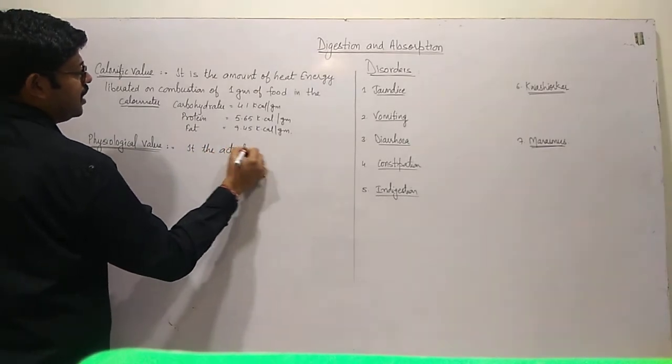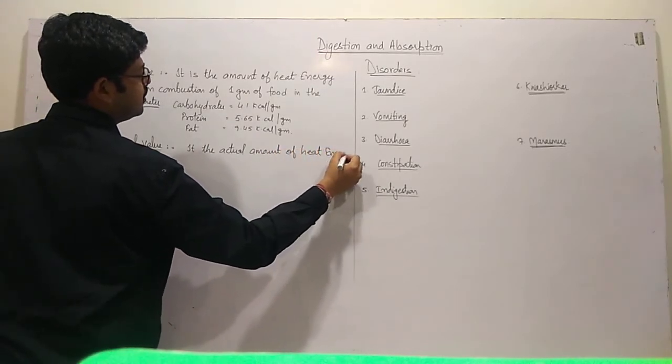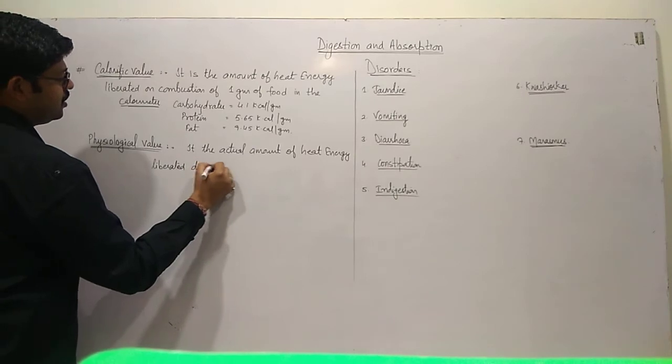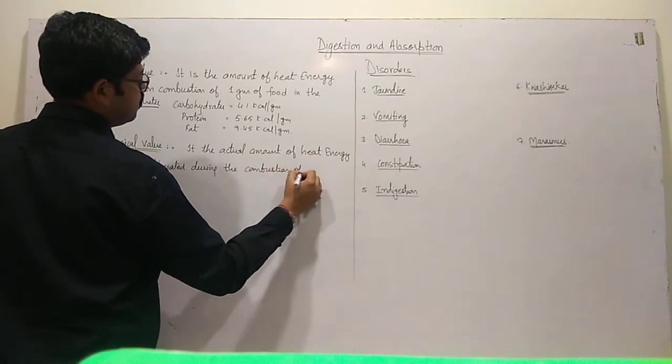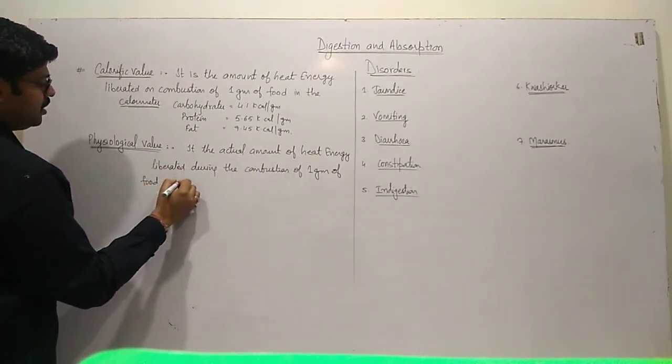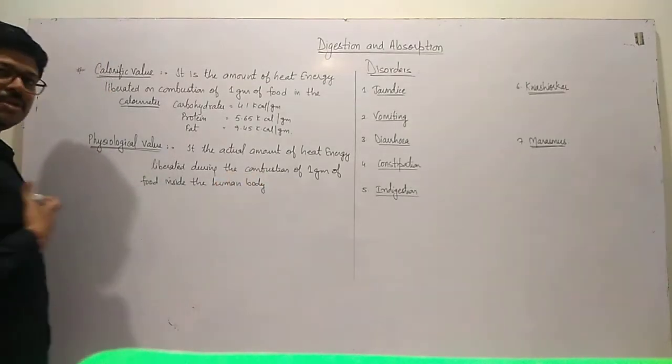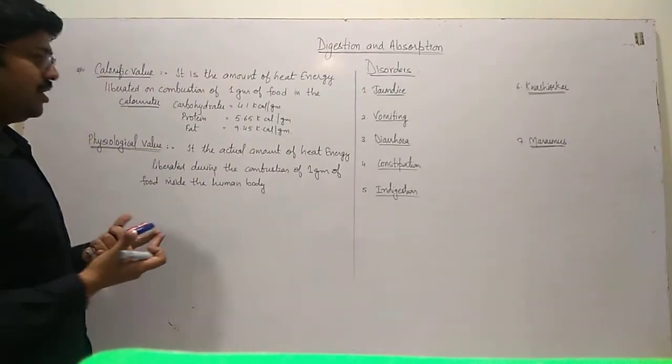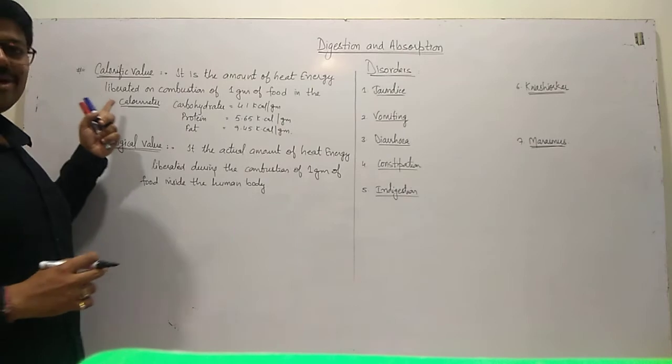Physiological Value is the actual amount of heat energy liberated during the combustion of 1 gram of food inside the human body. The actual amount is always less than the Calorific Value.